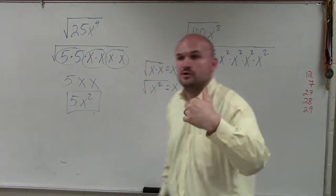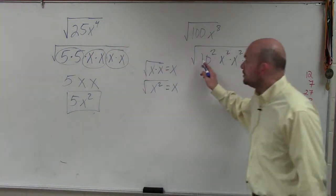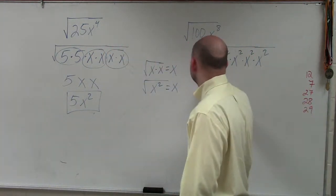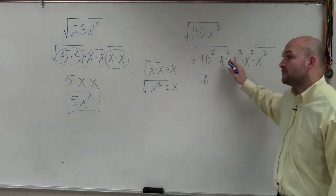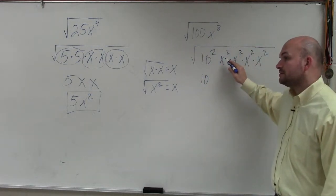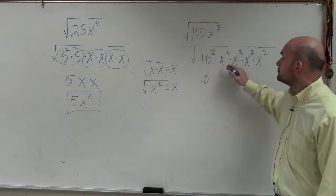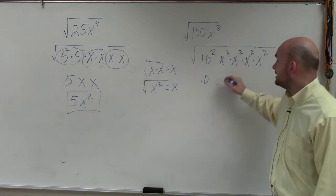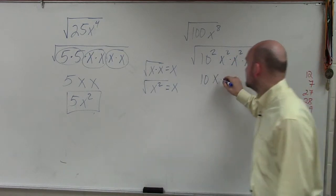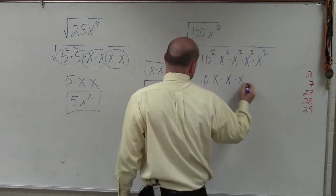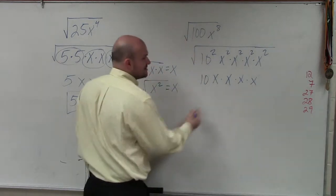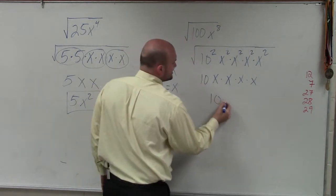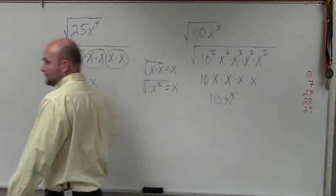I can take the square root of each of these. The square root of 10 squared is just going to be 10. The square root of x squared is x, and we have four of those. So my final answer is 10x to the fourth.